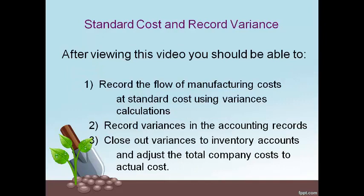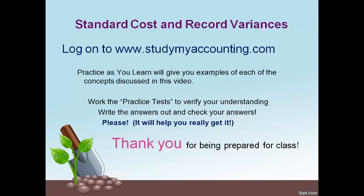After viewing this video, you should be able to record the flow of manufacturing cost at standard cost using variances and calculations, and close out the variances to inventory accounts to adjust the total company cost to the actual cost. Please log on to studymyaccounting.com and do the practices for examples of each of the things discussed in this video. Then work your practice test, write them out, and check your answers to the answers and explanations provided. Thank you for being prepared for class.